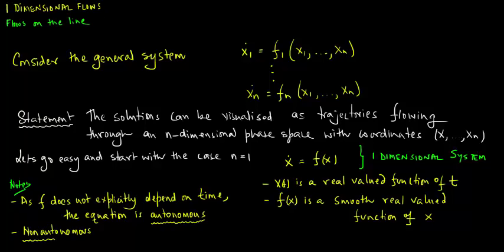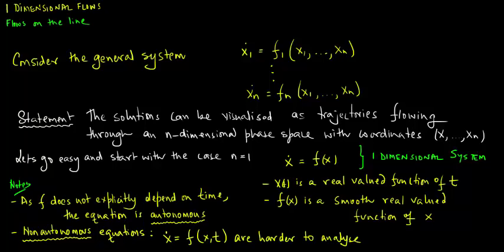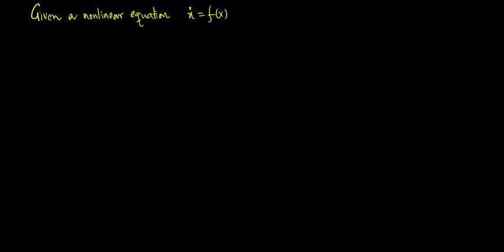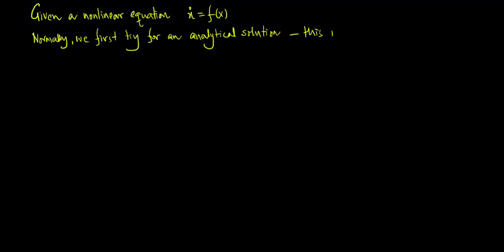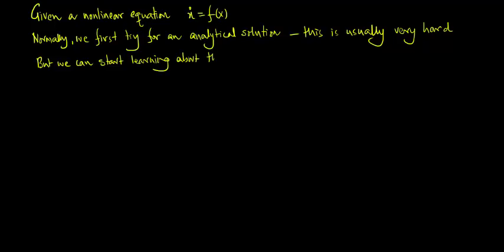Non-autonomous equations are equations of the form x dot is equal to f of x and t, and are in general much harder to analyze. Given a non-linear equation x dot is equal to f of x, normally we first try and look for an explicit analytical solution. This is usually very hard, but we can start learning about the equation using geometric methods.